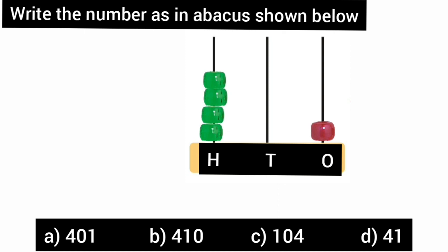Children, in the abacus shown below, write the number. How many beads are shown in the ones place of the abacus? Very good. One bead. That is, one ones — one.